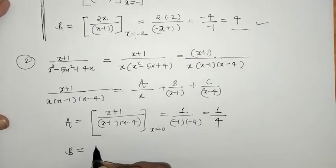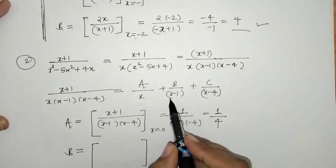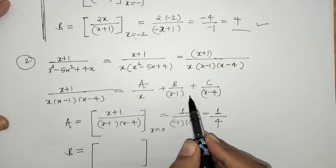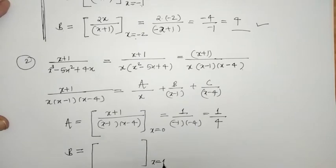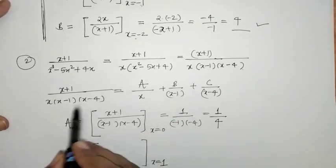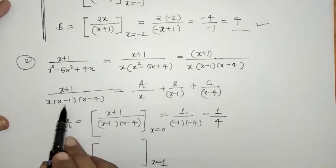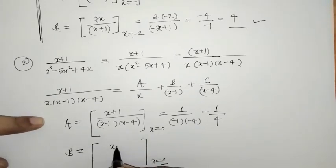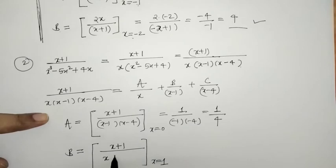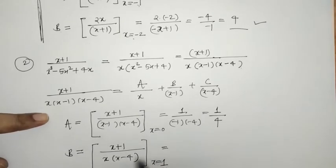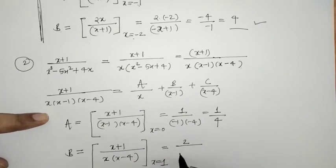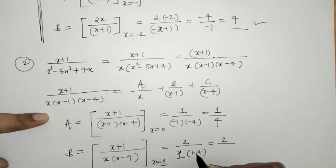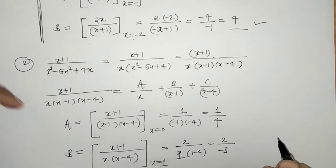To find B, put x-1 = 0, that means x = 1, avoiding the (x-1) factor. The remaining expression is (x+1)/[x(x-4)]; substituting x = 1 yields (1+1)/[1(1-4)] = 2/(1×(-3)) = -2/3. Therefore B = -2/3.